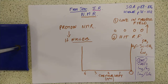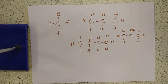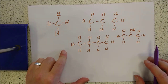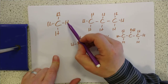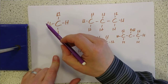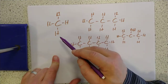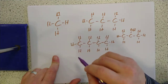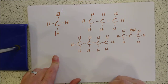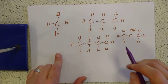We move on to hydrogen environments — the proper term, which I call different flavours of hydrogen. We've got four different molecules, and we're going to spot how many different environments of hydrogen there are. For the first molecule, all four hydrogens are identical — equivalent to each other — so there is only one single hydrogen environment. That's nice and simple.